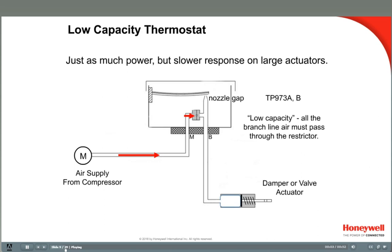Thermostats are available in low-capacity or high-capacity models. In a low-capacity thermostat, a low volume of air passes through the restrictor, so the actuator responds slowly to change — it simply takes time to fill the volume of the actuator diaphragm, and the larger the actuator, the slower the response. In most cases, HVAC loads change relatively slowly, so the low-capacity stat often keeps up just fine, particularly with smaller actuators. The TP973 is a low-capacity pneumatic thermostat. If faster-changing loads are encountered, especially with larger actuators, then high-capacity stats should be considered.